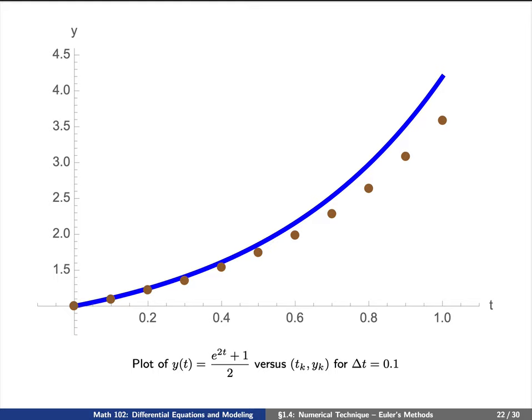Here, we've actually plotted the 10 points that we had on the previous slide. You can see here that the gold points don't exactly match up with the blue line when t gets larger and larger. This is exactly the error that we discussed before.